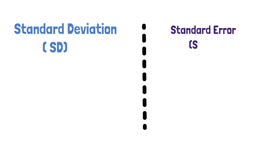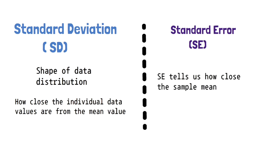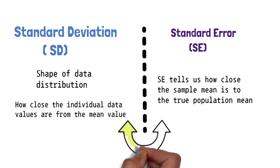Standard deviation and standard error are two commonly used terms, but they represent two very different concepts. Standard deviation tells us the shape of data distribution and how close individual data points are from the mean value. Standard error, however, tells us how close the sample mean is to the true population mean. Together, they present more complete information than just the mean alone.